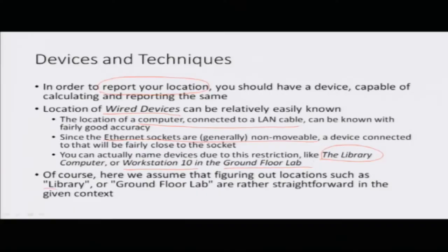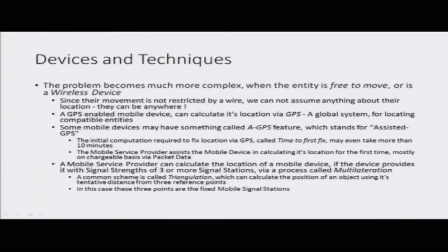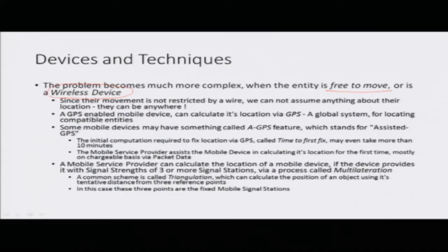We are assuming that figuring out where the library or ground floor lab is located is significantly easier. The problem becomes much more complex when the entity is free to move — basically when the entity is a wireless device, because wireless devices can be present anywhere. Figuring out their location is therefore a little more tricky. We will look at how these devices generally compute their location and send it to servers.